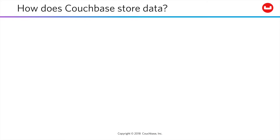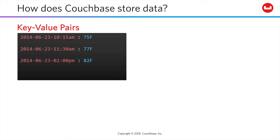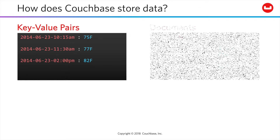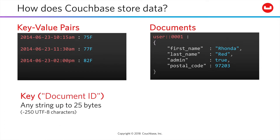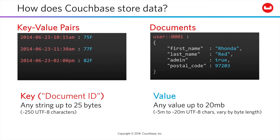At base, Couchbase stores key-value pairs. Those pairs could have a somewhat complex key, like a date-time stamp, associated with a simple string value, like a temperature reading. Or the pair could use some arbitrary but unique value as a key, associated with a text document in some useful format, like JSON. As a result, the key to a stored document is commonly called its document ID, but the terms key and document ID are interchangeable. The key can be any string value up to 25 bytes, or about 250 characters. The value of a document is anything up to 20 megabytes, which could be anywhere from 5,000 to 20,000 characters, depending on the byte length of the character set in use.